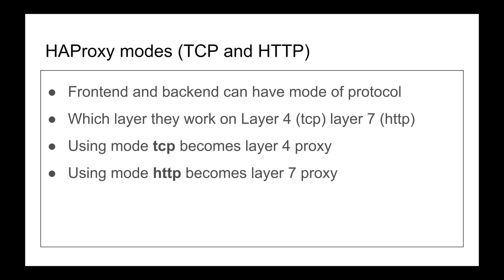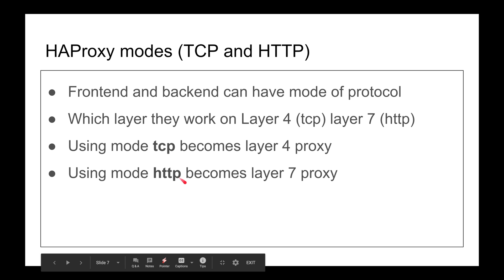If you don't trust your proxy, and you have a backend that is secure with a certificate, and you just want the proxy to do load balancing and round robin without rerouting or inspecting traffic — use a Layer 4 proxy. It will do SSL passthrough and will not terminate the TLS.